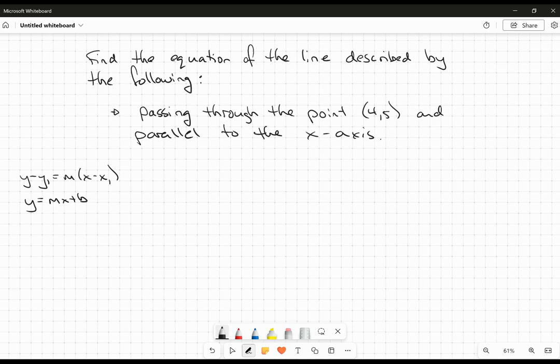When we say parallel to the x-axis, let's just draw this out here. Parallel to the x-axis is going to the point (4,5). So 1, 2, 3, 4, 5. I'm sorry. 1, 2, 3, 4. And then 1, 2, 3, 4, 5. So it's going through this point right here.